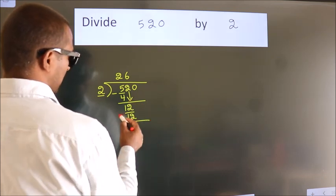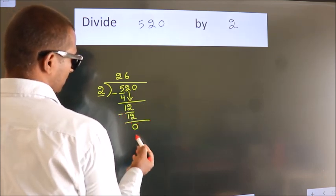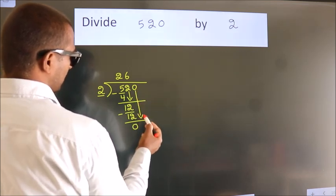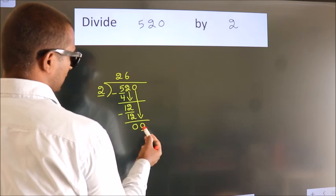Now, we subtract. We get 0. After this, bring down the beside number. So, 0 down. So, 0.